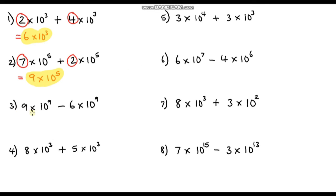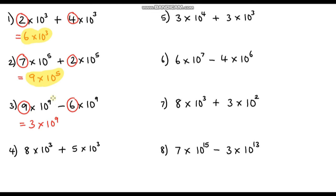Question 3: 9 times 10 to the power 9 minus 6 times 10 to the power 9. This time it's a subtraction, but the process is exactly the same — the powers of 10 are the same, so we just subtract our base numbers instead of adding them. 9 minus 6 is 3. Answer: 3 times 10 to the power 9.